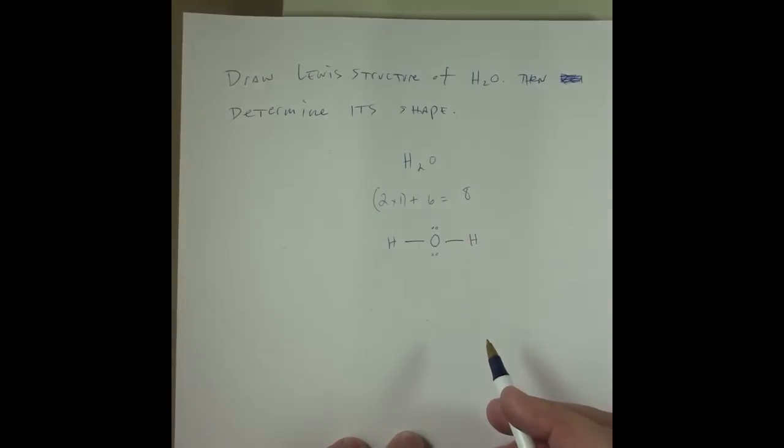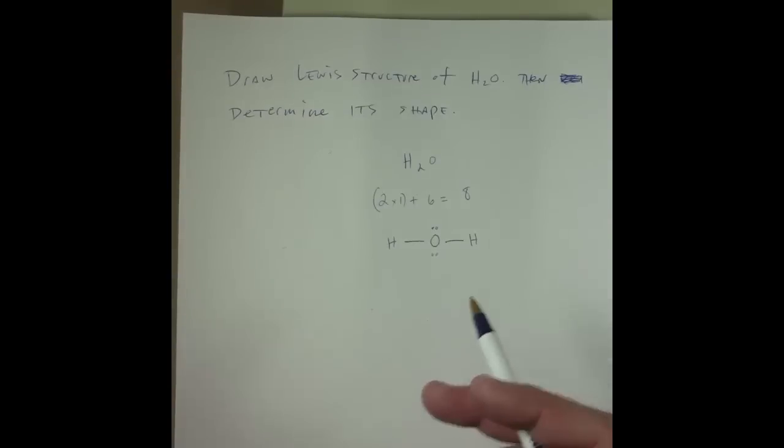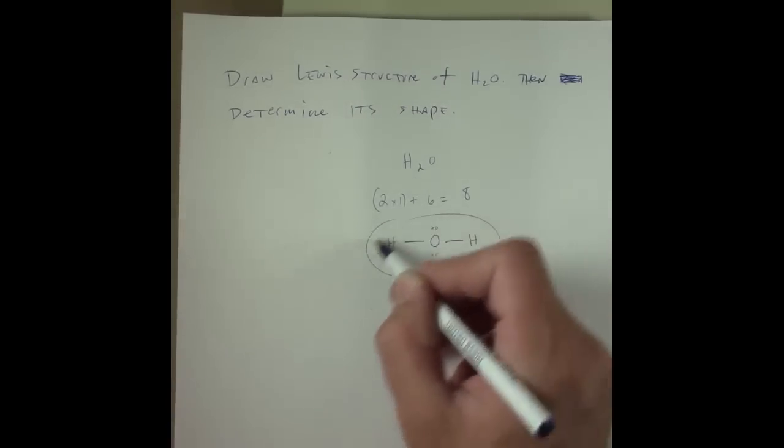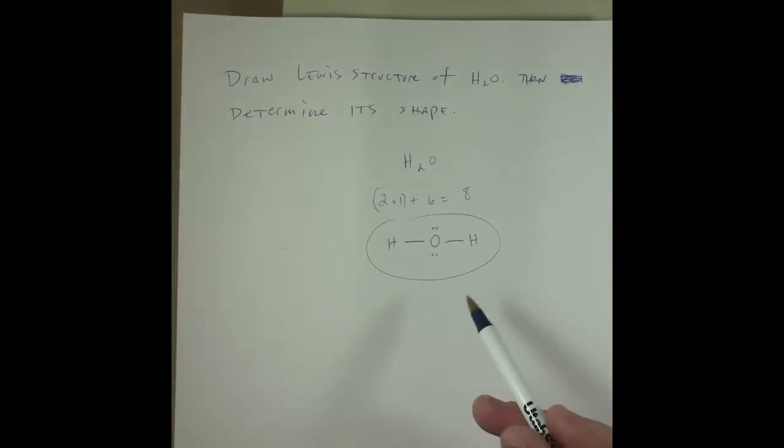I now count up the total number of electrons I've laid out in this Lewis structure. I've got two, four, six, eight. I've used all of my electrons, and then I ask myself, does everything here feel like it has an octet, or in the case of hydrogen, that it has a two-tet? The answer is yes. So this is the correct Lewis structure for that molecule.